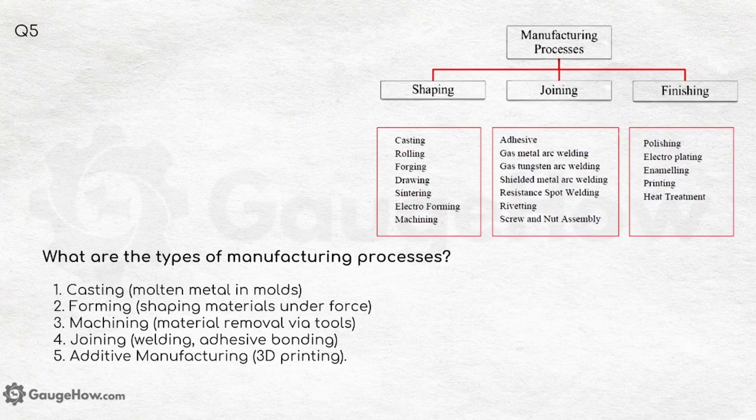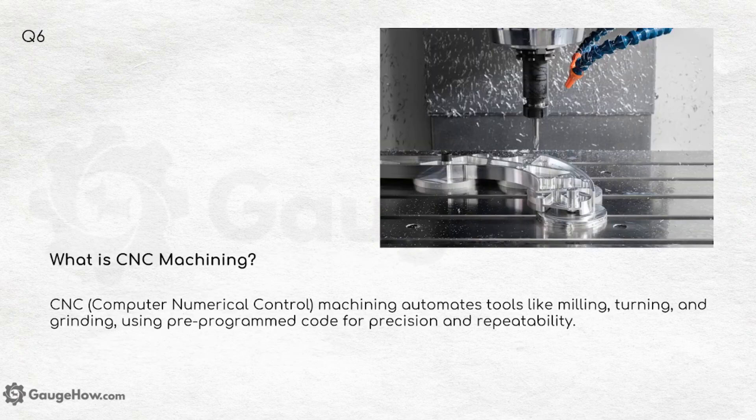What are the types of manufacturing processes? First is casting — molten metal in molds. Second is forming — shaping materials under force. Third is machining — material removal via tools. Fourth is joining — welding and adhesive bonding. And fifth is additive manufacturing, which involves 3D printing and such procedures.